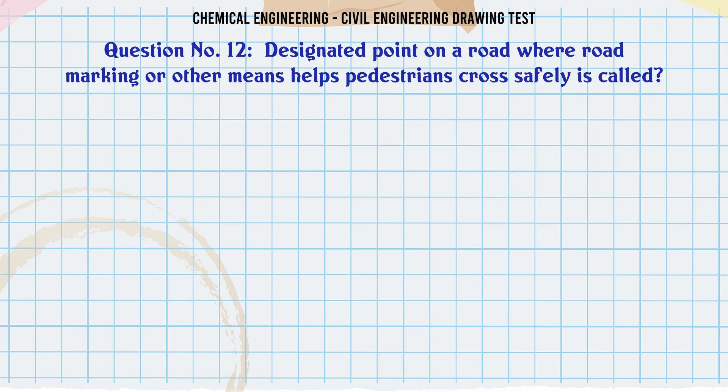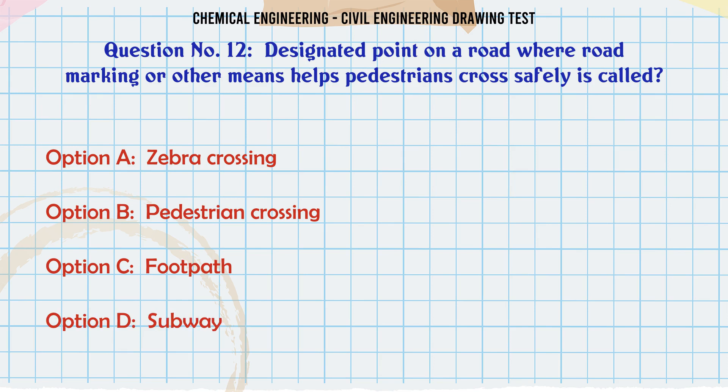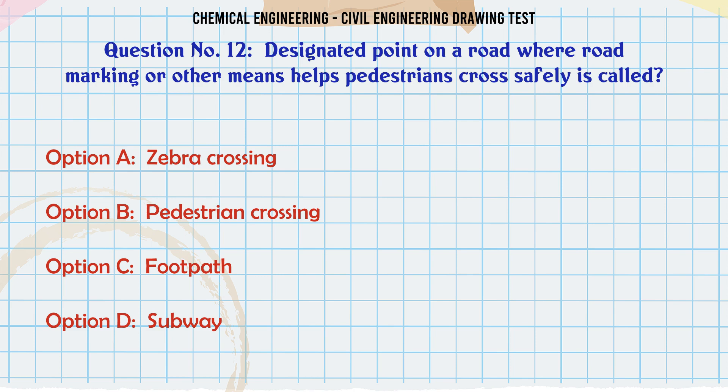Designated point on a road where road marking or other means helps pedestrians cross safely is called. A. Zebra crossing. B. Pedestrian crossing. C. Footpath. D. Subway. The correct answer is Pedestrian crossing.